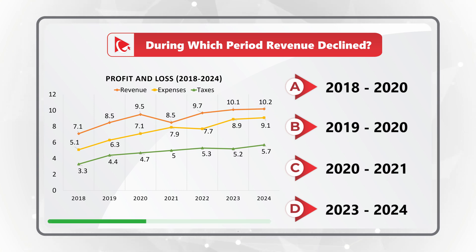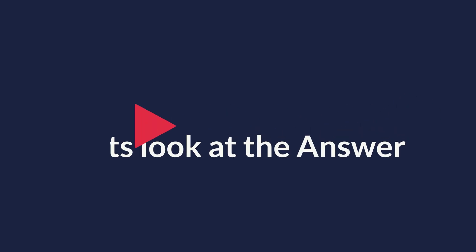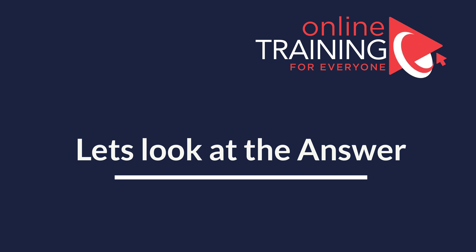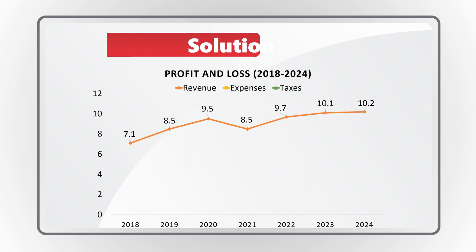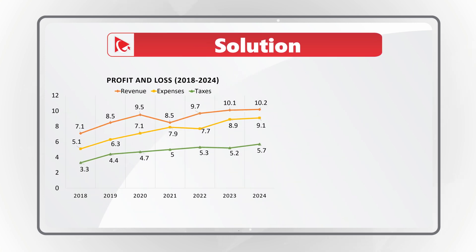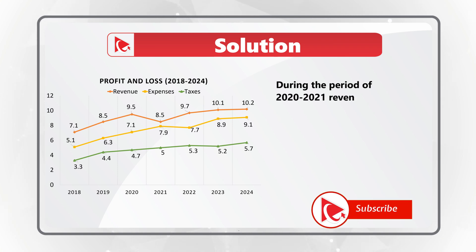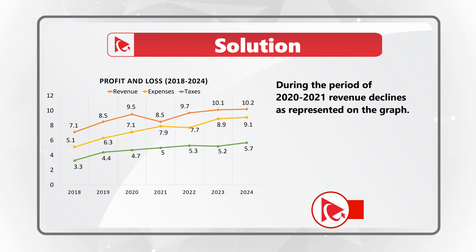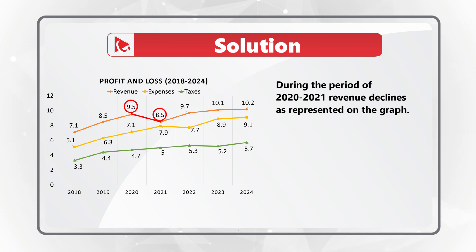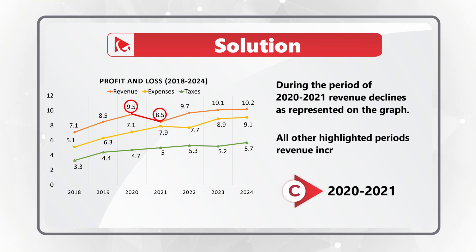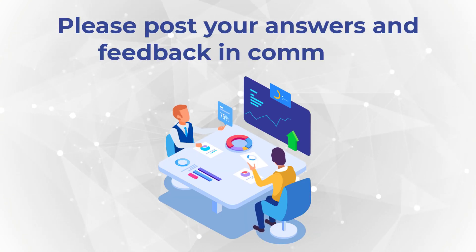Give yourself a little bit of time — pause this video to see if you can come up with the solution. The way I see it, revenue goes down between 2020 and 2021, represented by the blue line. In 2020, revenue was about 9.5 units, and then in 2021 it went down to approximately 8.5 units. All other highlighted periods indicate revenue increases. Did you see it differently? Please post your answer in comments.